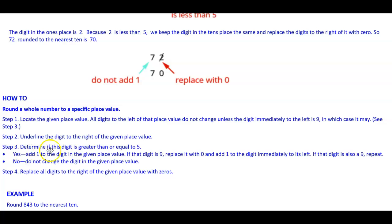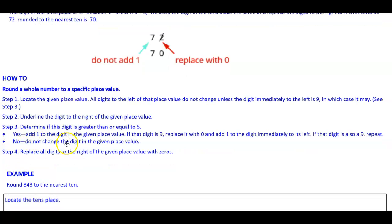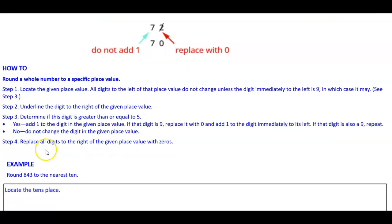Step 3: Determine if this digit is greater than or equal to 5. If yes, add 1 to the digit in the given place value. If that digit is 9, replace it with 0 and add 1 to the digit immediately to its left. If that digit is also a 9, repeat that process. If the number is not greater than or equal to 5, do not change the digit in the given place value. Step 4: Replace all digits to the right of the given place value with zeros.